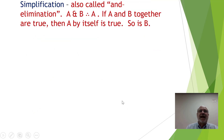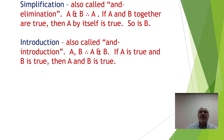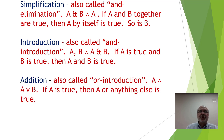Simplification, also called and-elimination: A and B, therefore A. If A and B together are true, then A by itself is true — and so is B by itself. Conjunction, also called and-introduction: A, B, therefore A and B. If A is true and B is true, then A and B combined is true.